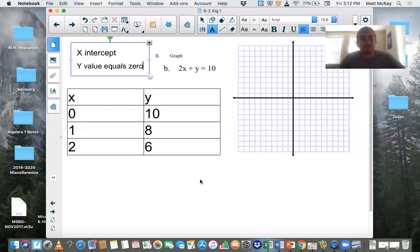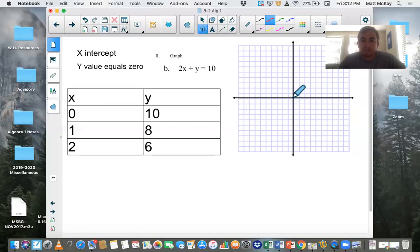So for x-intercept, for the x-intercept, the y value is always going to equal zero. And think about it like this. Here's the graph. We're saying the x-intercept. So here's the x-axis.